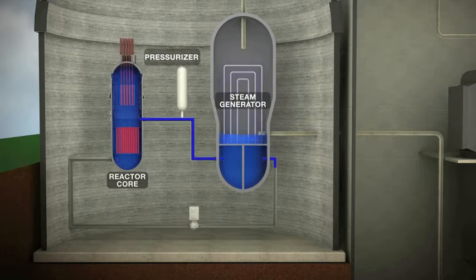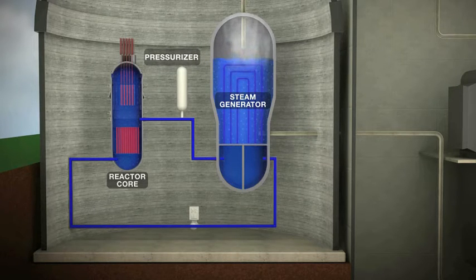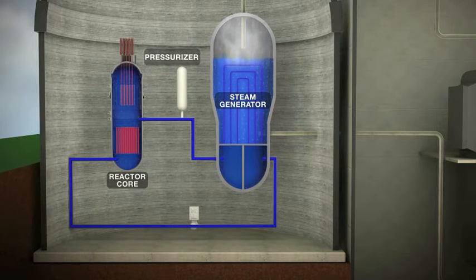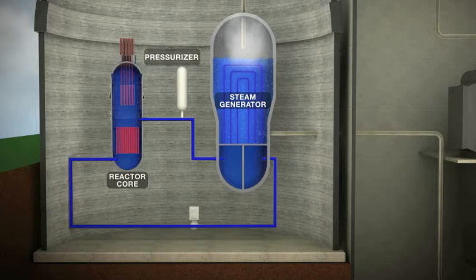The hot water is piped from the reactor vessel to a steam generator, where it transfers its heat to boil water and make steam in a second system.